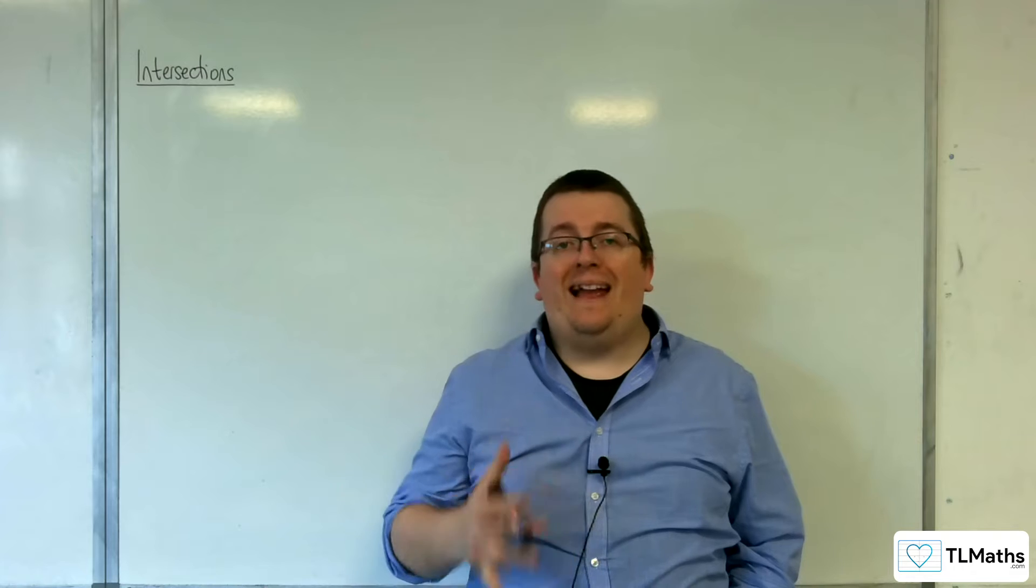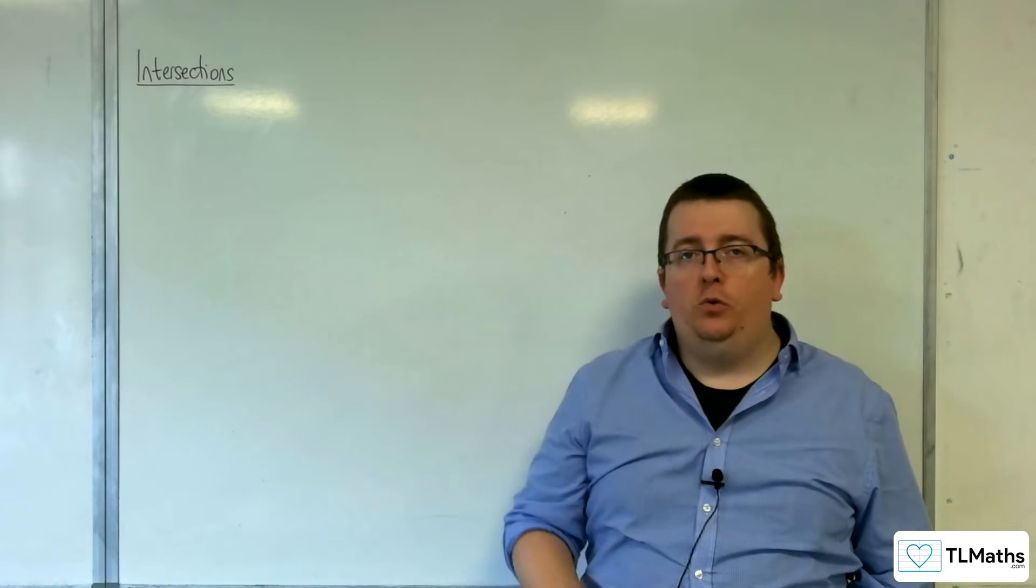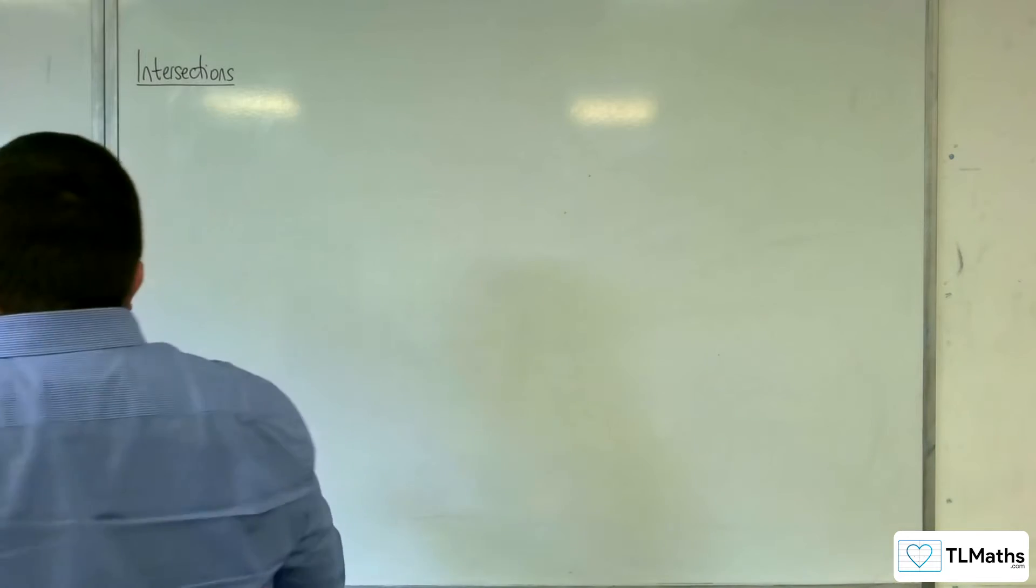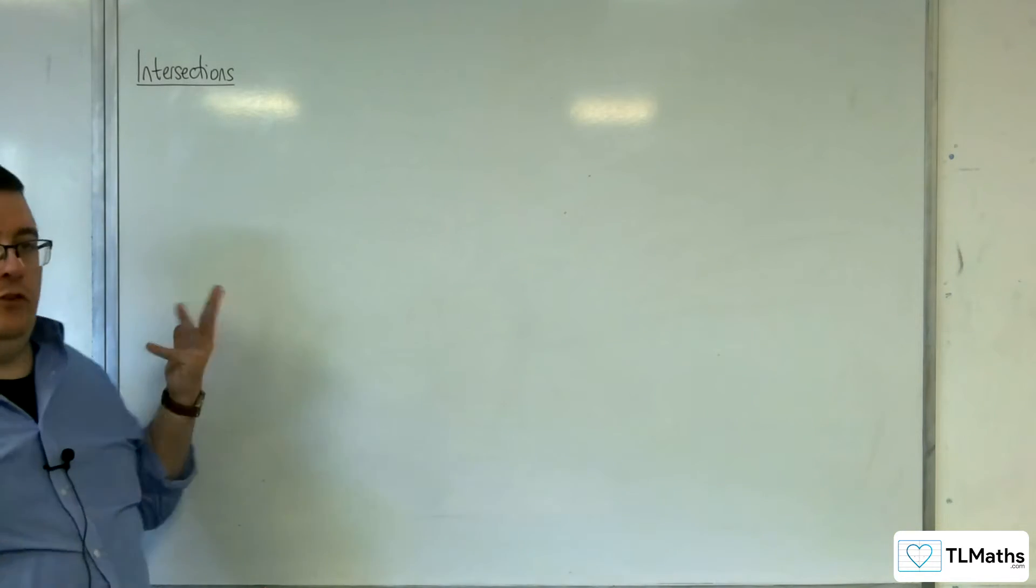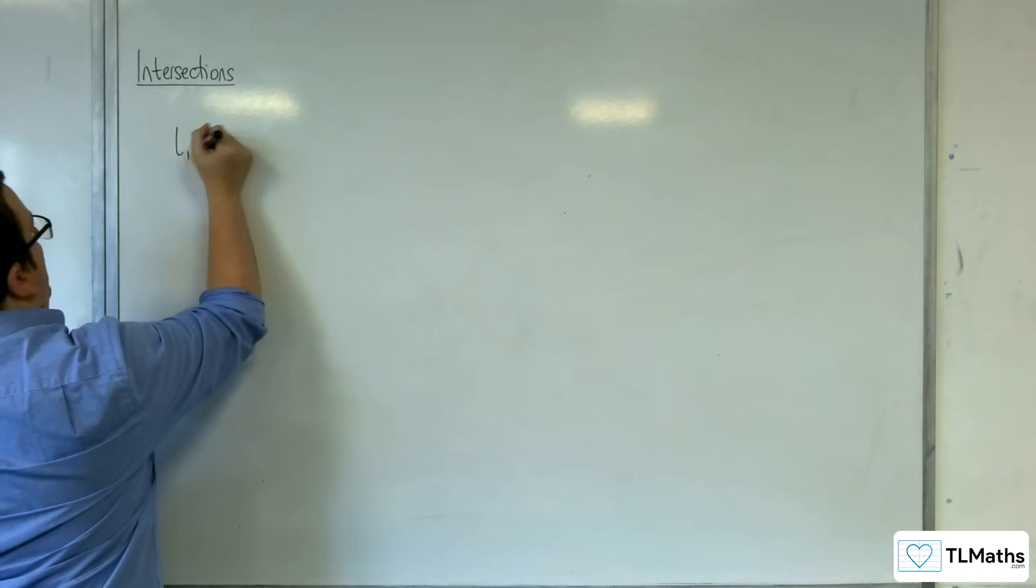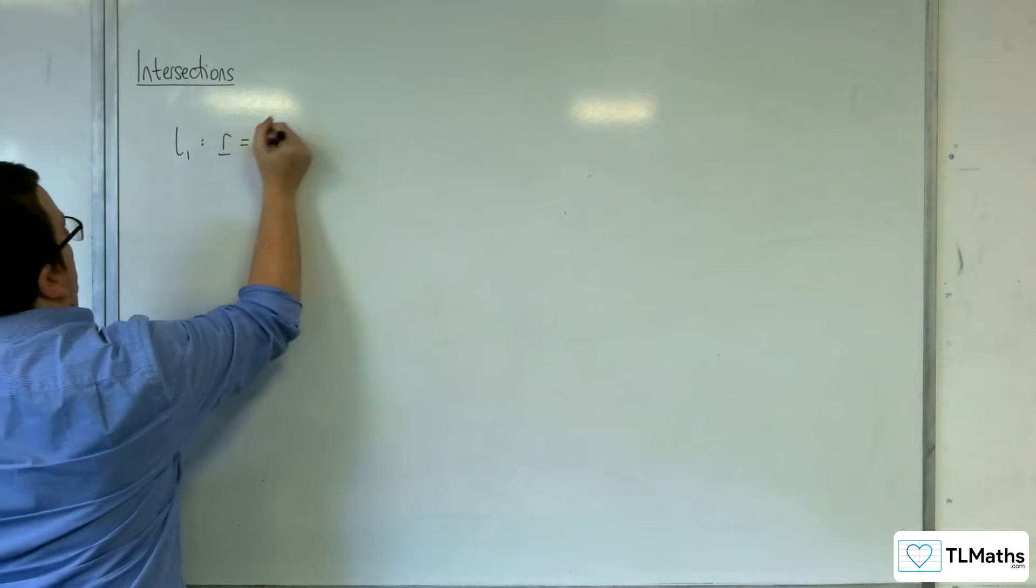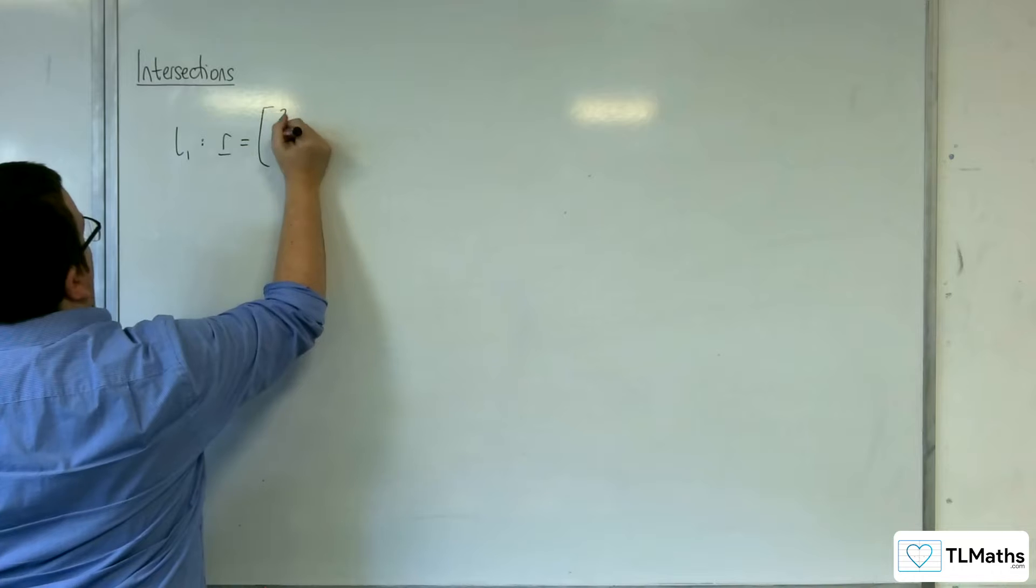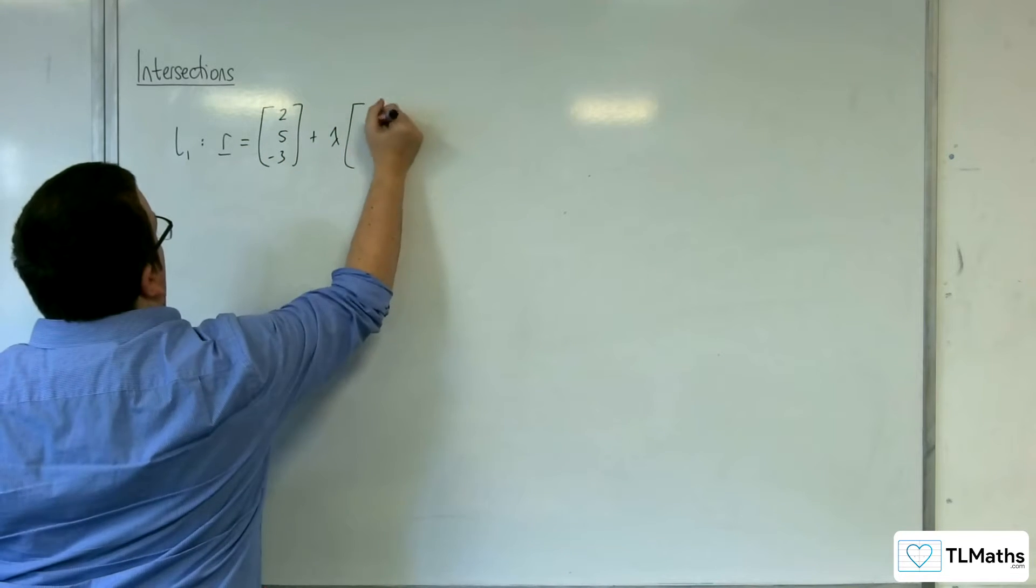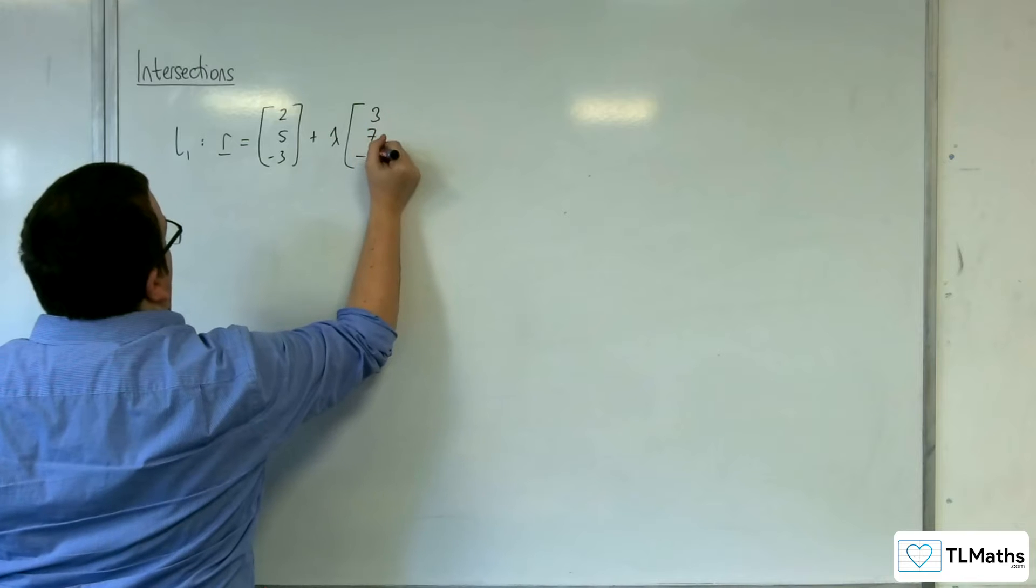In this video we want to look at how to determine whether two lines intersect or not. So let's say I come up with two lines. Let's call L1 the equation R equals, I'm just going to come up with numbers, so 2, 5, minus 3, plus lambda times 3, 7, minus 5.